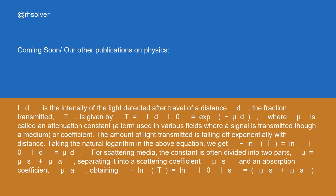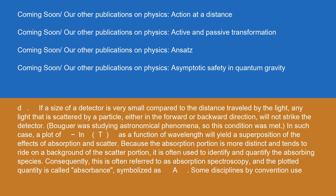For scattering media, the constant is often divided into two parts: μ = μ_s + μ_a, separating it into a scattering coefficient μ_s and an absorption coefficient μ_a, obtaining −ln(T) = (μ_s + μ_a) × d. If the size of a detector is very small compared to the distance traveled by the light, any light scattered by a particle — either in the forward or backward direction — will not strike the detector. Bouguer was studying astronomical phenomena, so this condition was met. In such a case, a plot of −ln(T) as a function of wavelength will yield a superposition of the effects of absorption and scatter.